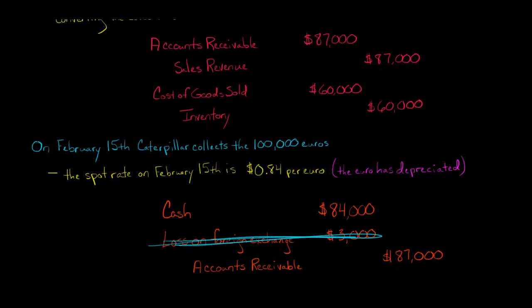But if we have a credit to accounts receivable for $87,000 and a debit to cash for $84,000, we need a plug. We need a $3,000 debit in order for the debits to equal the credits. And so we're going to call this loss on foreign exchange or foreign exchange loss. That's going to go on the income statement. It's going to reduce the company's profit.